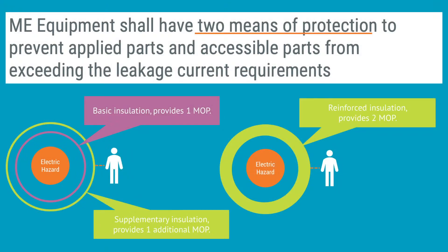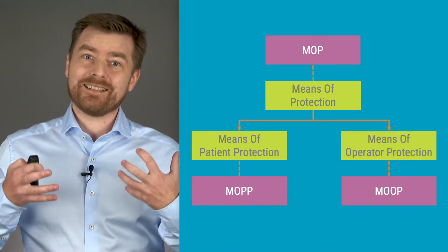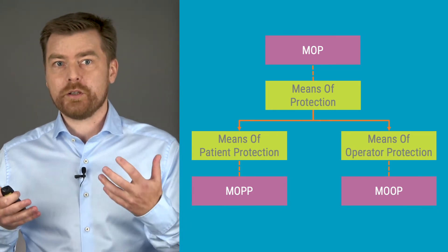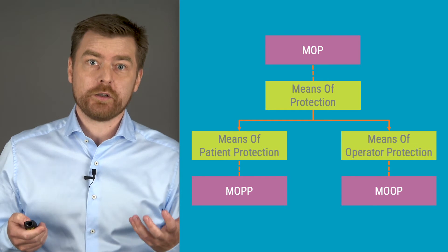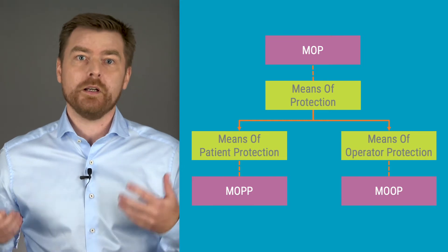In this video I will introduce you to the insulation requirements defined by the general standard. Insulation is one of the methods to protect patients and operators from electrical hazards. To ensure that your device is safe in single fault conditions, in general it shall have two means of protection to prevent leakage current from applied parts and accessible parts. Each means of protection is categorized either as operator protection or patient protection.